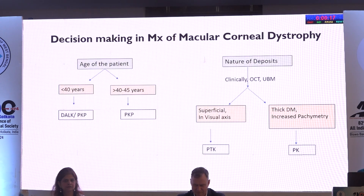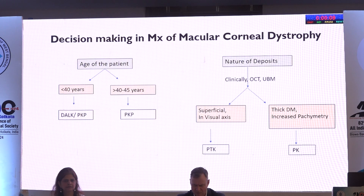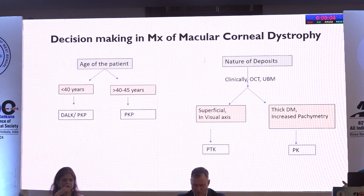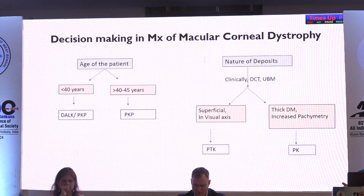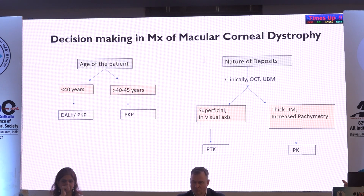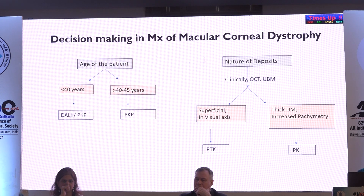In the decision-making algorithm for macular corneal dystrophy management: age is an important criterion — less than 40 years, DALK or PTK may be an option; above 40–45 years when cataract also starts developing, PK is a better choice. The nature of deposits can be characterized by clinical examination, OCT, and UBM. If they are superficial in the visual axis, PTK can be done to avoid or delay transplant. Thickened Descemet's membrane or increased pachymetry is an indication for penetrating keratoplasty.